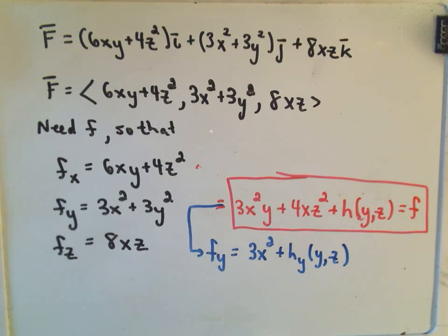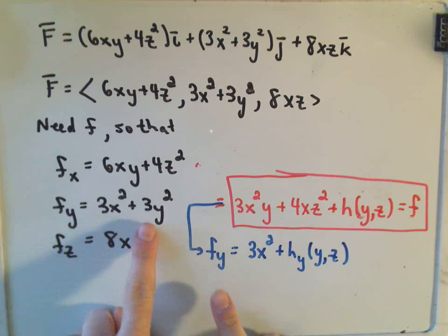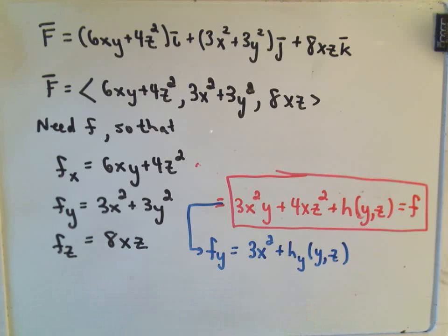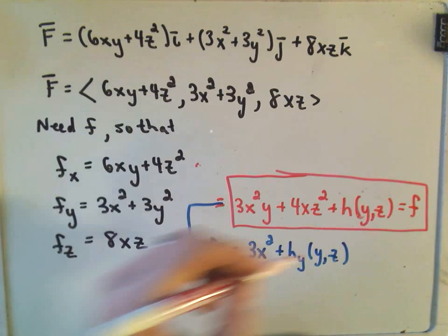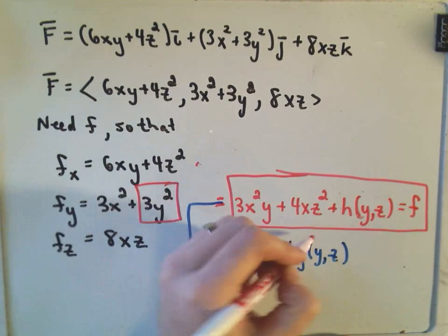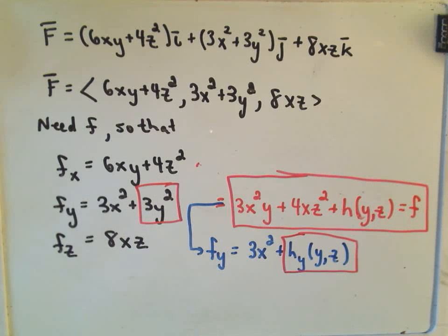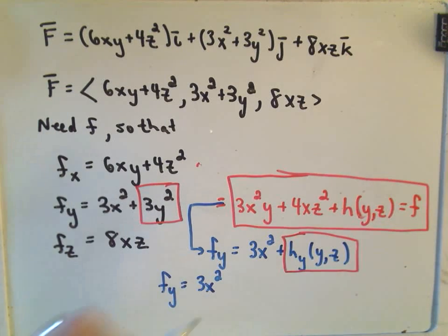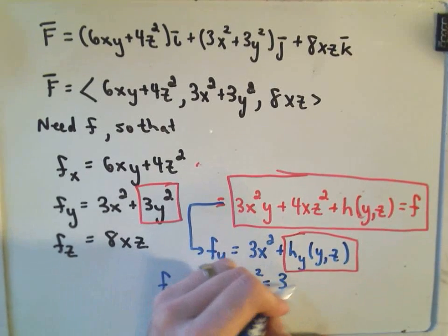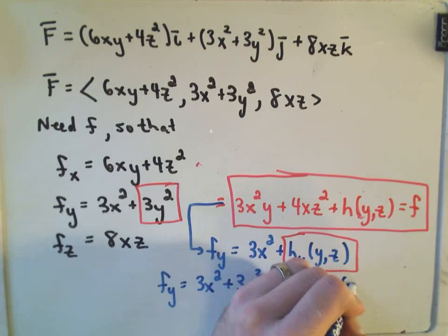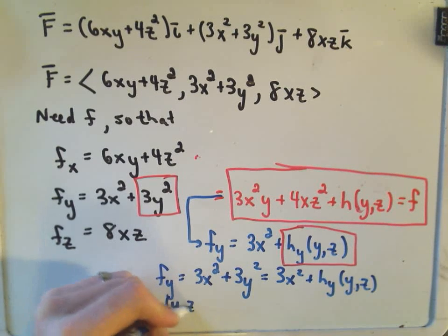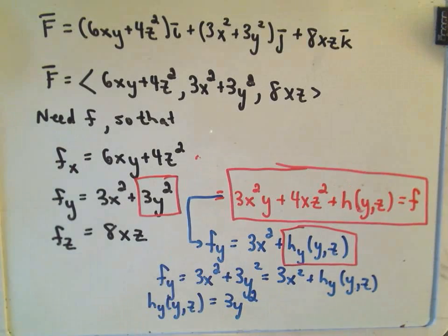The idea is we simply equate partial derivatives. We know ∂f/∂y must equal 3x² + 3y². This gives us 3x² + ∂h/∂y = 3x² + 3y², so the respective pieces must be equal to each other. Therefore ∂h/∂y = 3y².